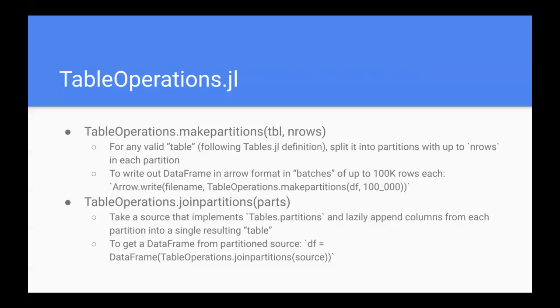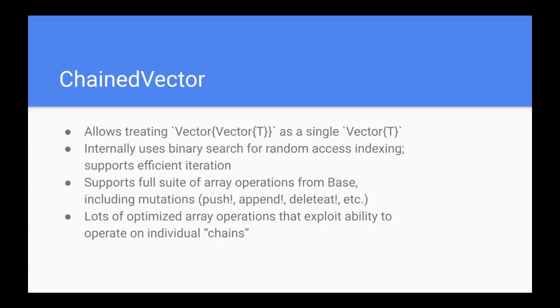And another piece of making this work, in join_partitions I said that they lazily append the columns from each partition, is the idea of this ChainVector type. So this is a new abstract vector type that's defined in the SentinelArrays package, and what it allows you to do is treat a vector of vectors as a single vector. So I have a collection of vectors with different lengths or whatever, they're kind of the different chunks of data, if you will, different chains, and I want to chain them together into one long vector without kind of reallocating, copying, and all that.